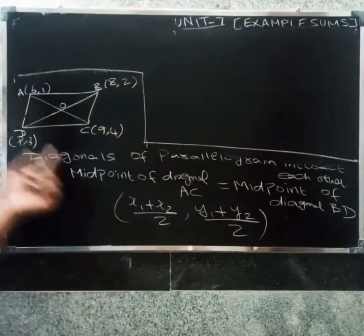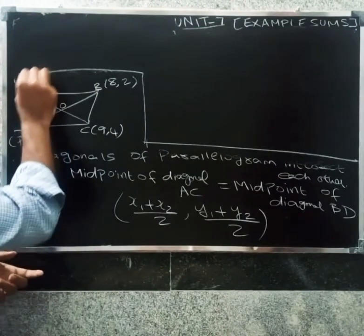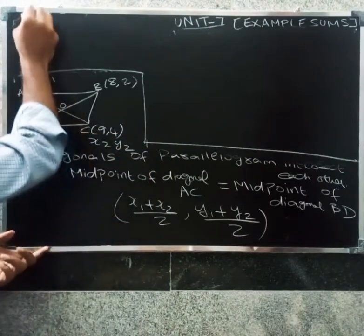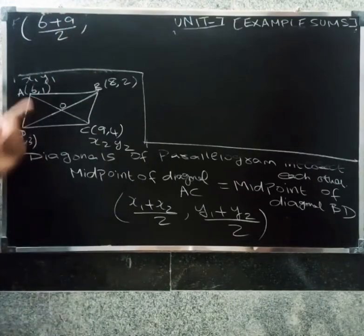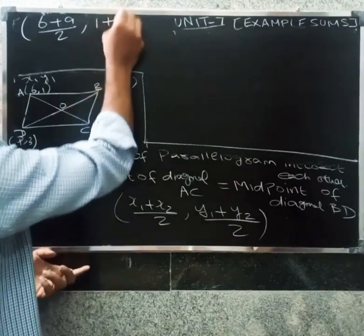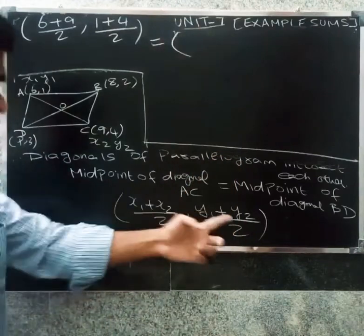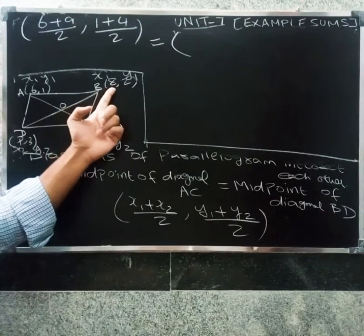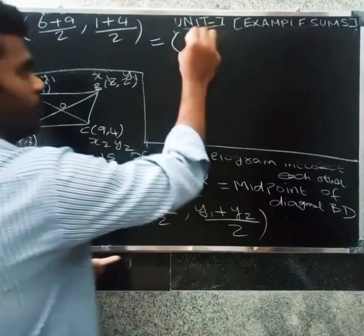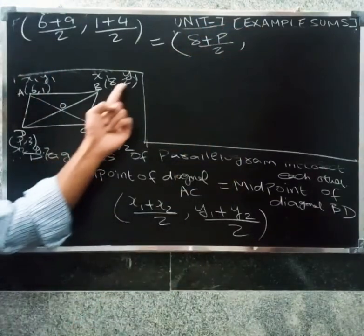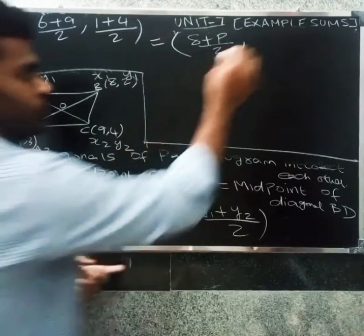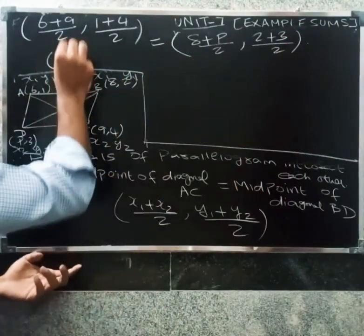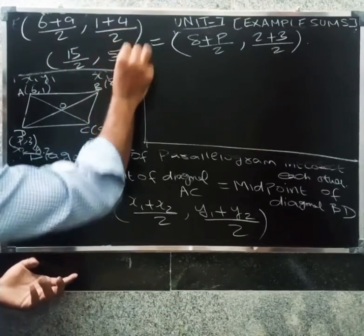For diagonal AC: x1 y1 and x2 y2, so x1 plus x2 gives 6 plus 9 by 2, and y1 plus y2 gives 1 plus 4 by 2. For diagonal BD: x1 is 8, x2 is p, so 8 plus p by 2, and y values 2 plus 3 by 2. Now 9 plus 6 equals 15, divided by 2 equals 15 by 2.